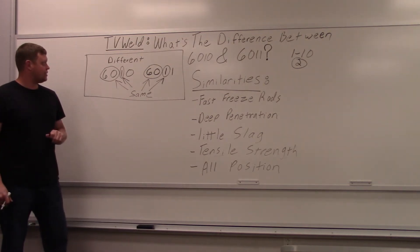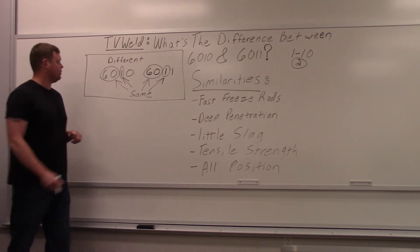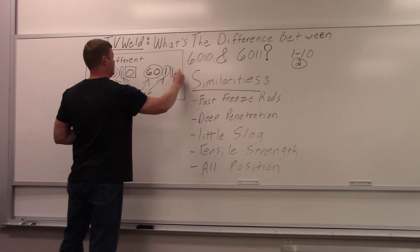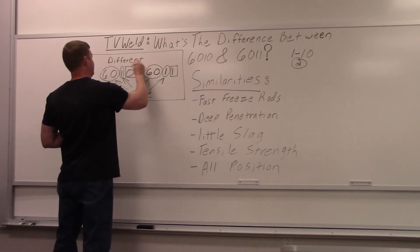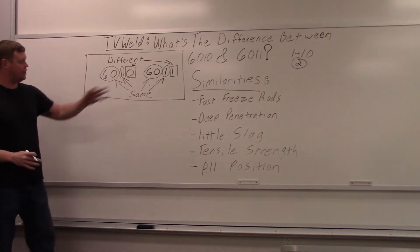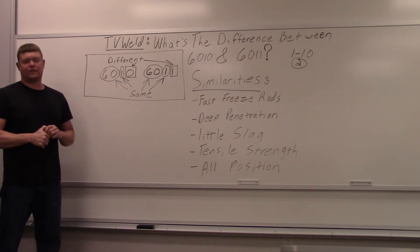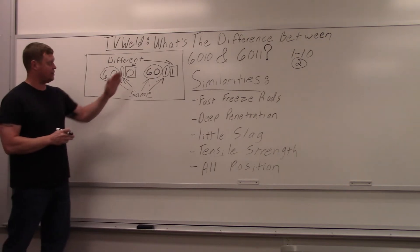And the last number is the only different one. So we'll put a square around this because it's different. And then we'll point here over the different and here. So that's the difference in the designation. What does that exactly mean? Well, it's the coating composition and the electrical characteristics. That is what the last number means.